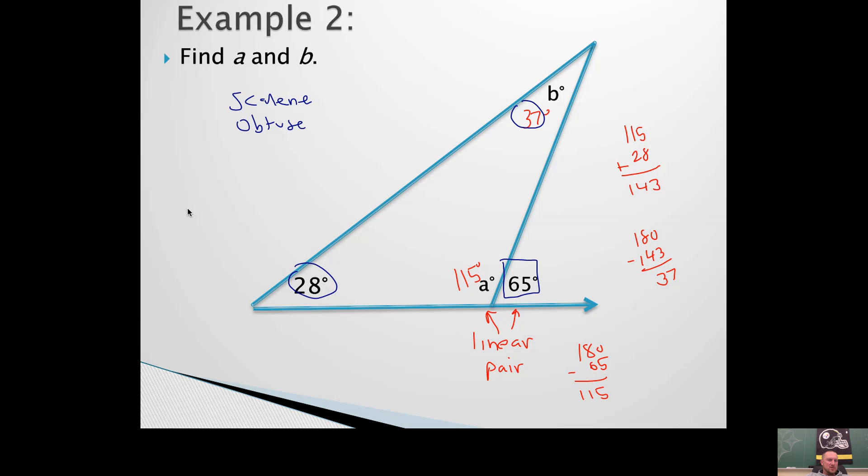What is 28 plus 37? It's 65. That's not a coincidence. That's actually our next theorem.